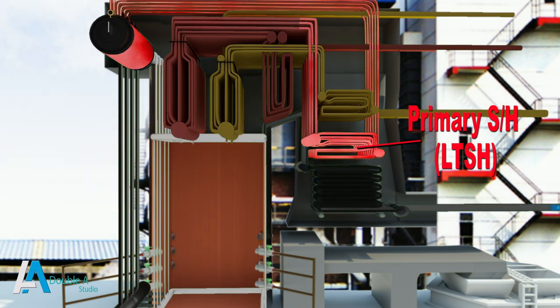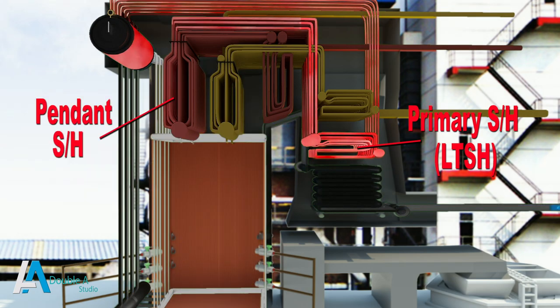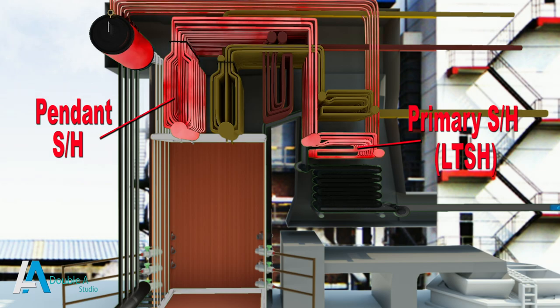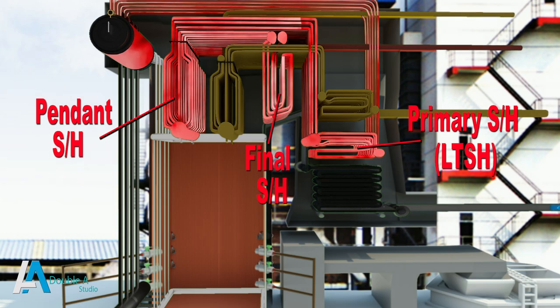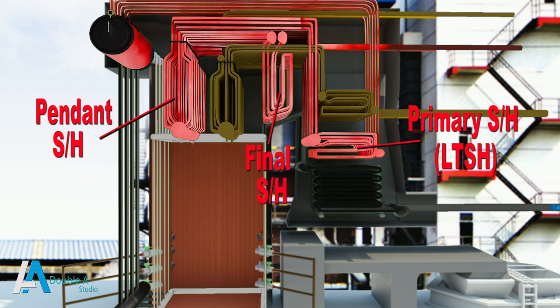After exiting the primary superheater, steam goes to the pendant type superheater, which is located in the roof section of the boiler. Here steam is further heated up and then goes to the final superheater, which is a radiation type superheater. After these stages of heating, saturated steam gets converted into superheated steam. In the final superheater, the rise in temperature of steam is much more as compared to the heat transfer that takes place in the primary superheater.